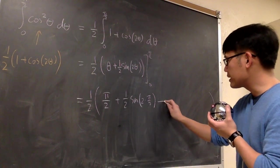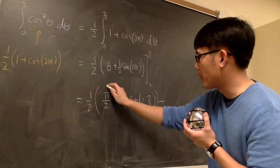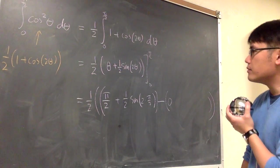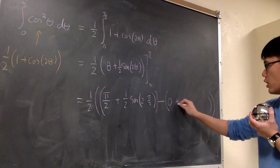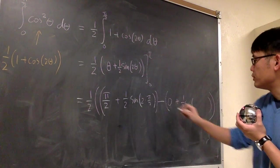We have to subtract. Plug in 0 into here. Plug in 0 into theta. We have 0. This is the second part. Plus 1 half sine of 2 times 0.